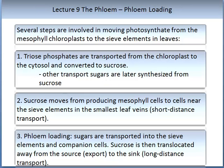Phloem loading is the process where photosynthates move from the chloroplast into the phloem. There are several steps. The first step involves triose phosphates, which are transported from the chloroplast to the cytosol and converted to sucrose. Other transport sugars are later synthesized from sucrose. The second stage is sucrose moving from the producing mesophyll cells to cells near the sieve elements in the smallest leaf veins — this is short distance transport. The third step is phloem loading, where sugars are transported into the sieve elements and companion cells. Sucrose is then translocated away from the source to the sink via long distance transport.